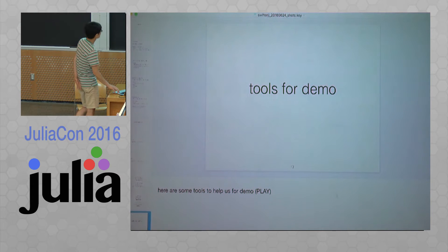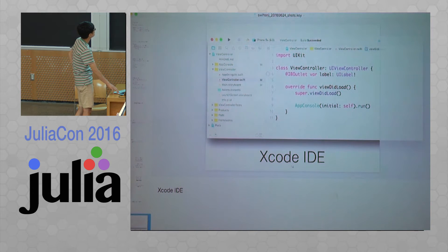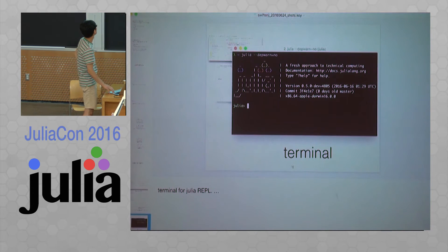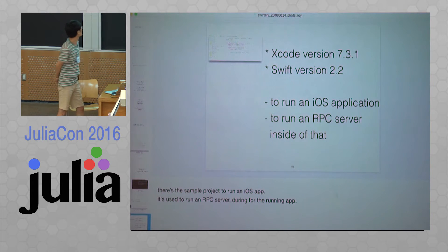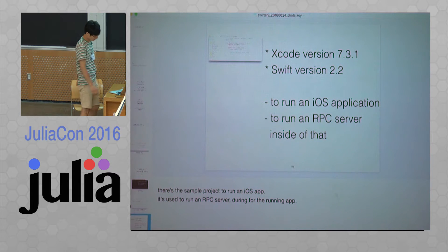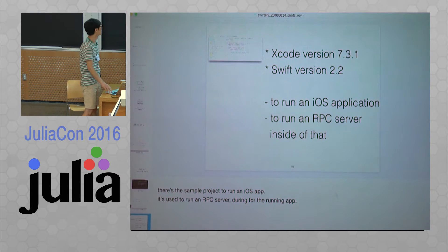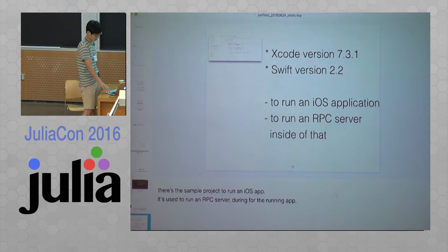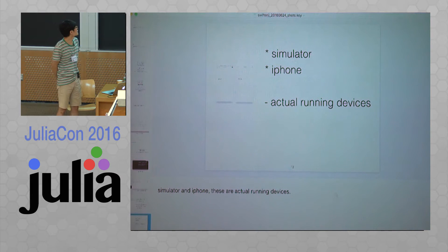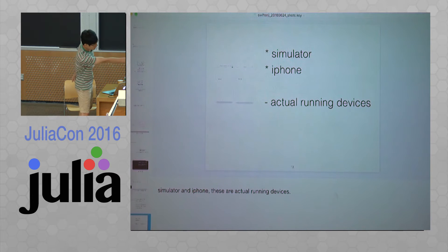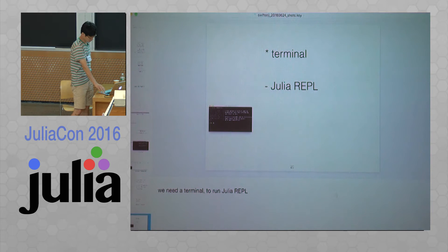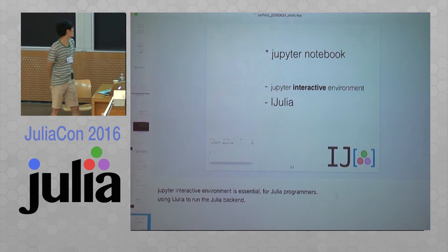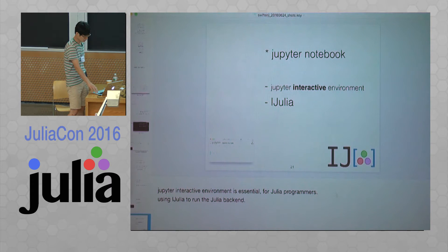Here are some tools to help us: Xcode, a simulator iPhone, a terminal, and a Swift notebook. There is a sample project to run ISF. It runs the IPC server during the learning app. The simulator and iPhone are actual devices. We need a terminal to run the Julia wrapper, and Jupyter as an interactive environment, which is essential for Julia programmers.